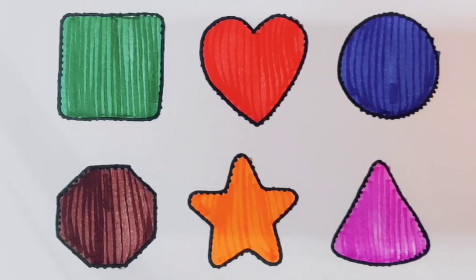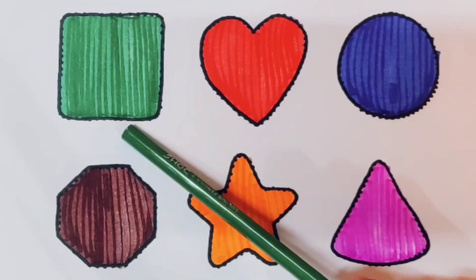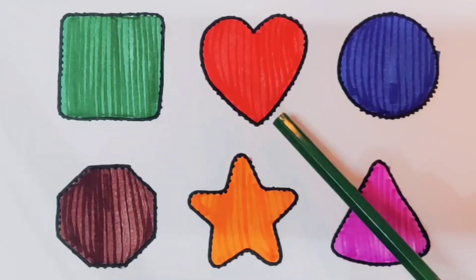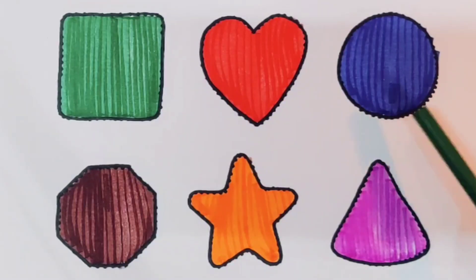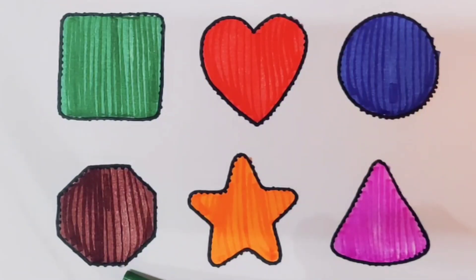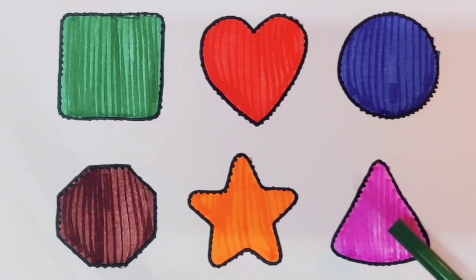What we learned? We learned green color square, red color heart, blue color circle, chocolate color decagon, orange color star, pink color triangle.